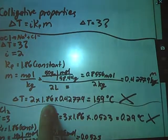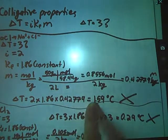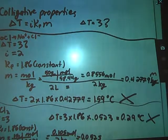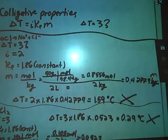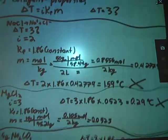Hoff factor times constant times molality gives me a freezing point depression of 1.59. That is not the 3 that I was looking for. So let's try our next substance.